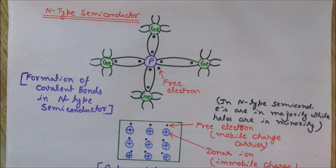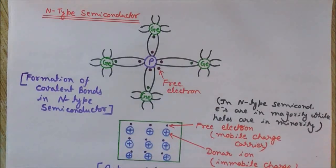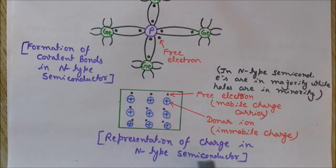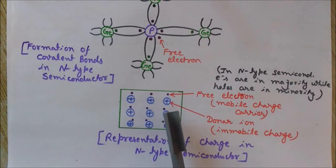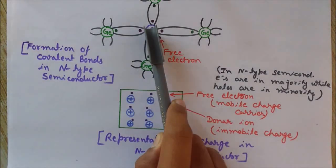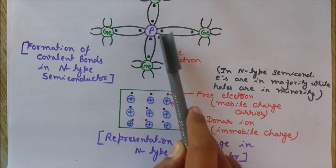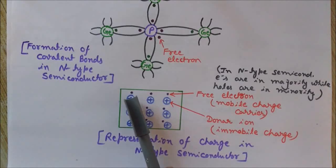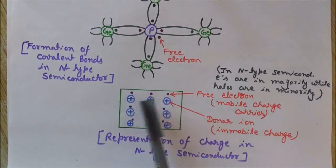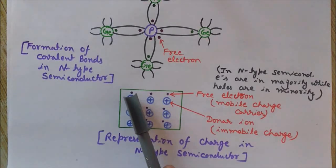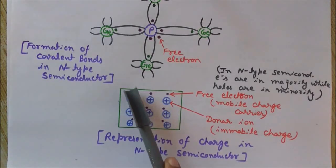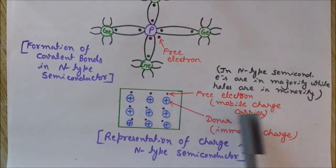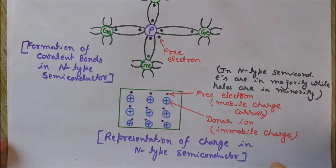In n-type semiconductors, electrons are in majority while holes are in minority. Since the phosphorus atom has donated one electron, it becomes a positively charged ion due to the lack of one negative charge. We represent the n-type semiconductor with a positive ion and one free electron — the positively charged ion results from losing one electron, and this free electron is the mobile charge carrier.